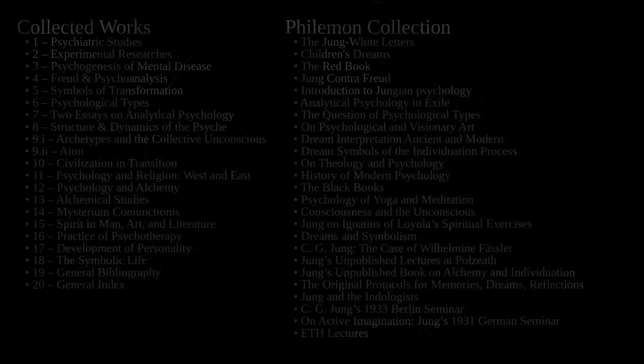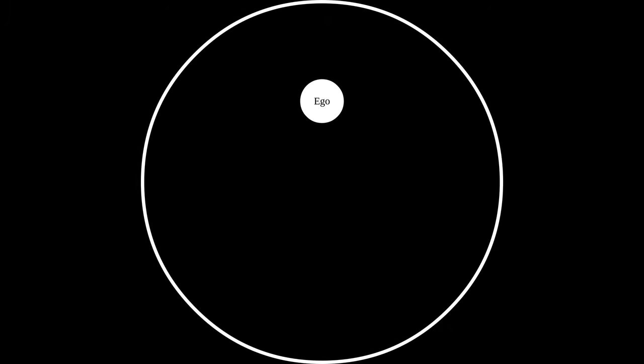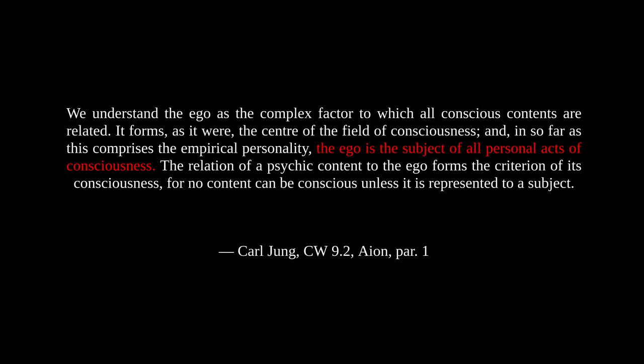Let's begin with the ego. The ego is, basically, the part of you that is conscious. Jung described the ego as the subject of all personal acts of consciousness. In other words, when you make a conscious choice, the ego is the thing choosing.